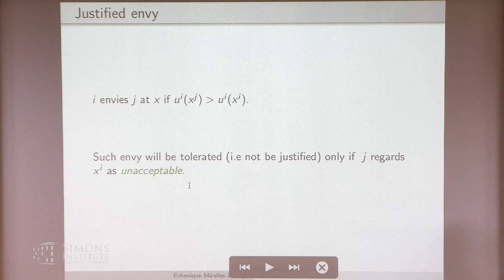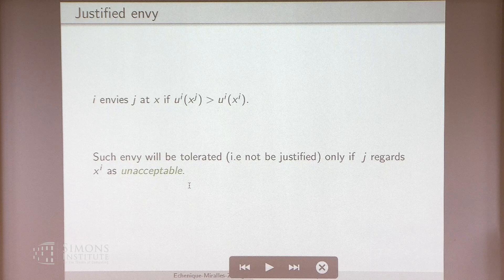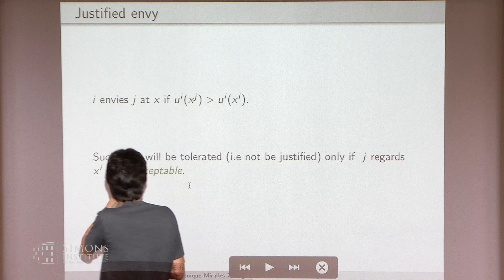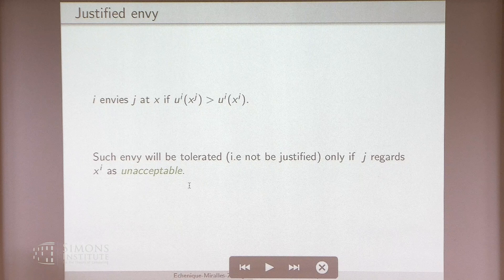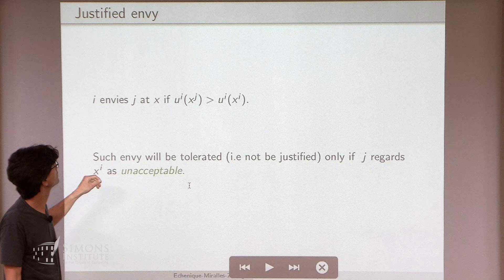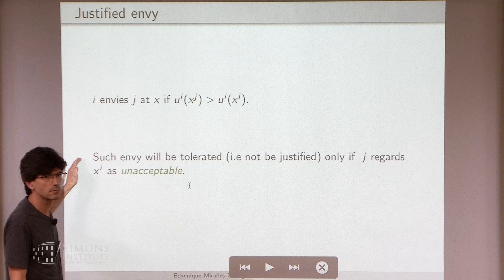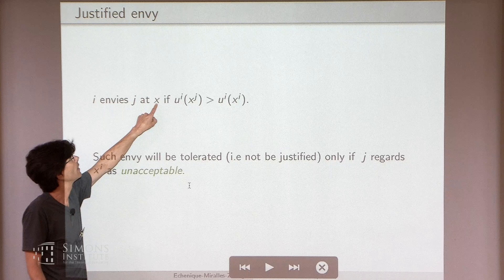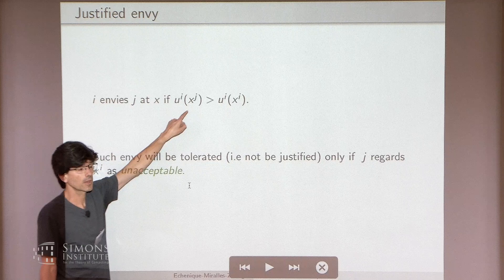Question: why do you use j's preferences to determine whether i's envy is okay? Answer: because it's j's property rights. The question about j's property rights is whether j likes x_i as much as his or her endowment. Agent j is assigned some allocation x_j in the mechanism, which need not be the endowment — j's property right is to not be made worse off than the endowment omega_j.